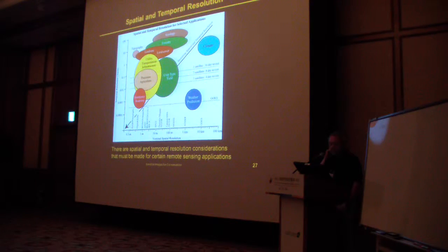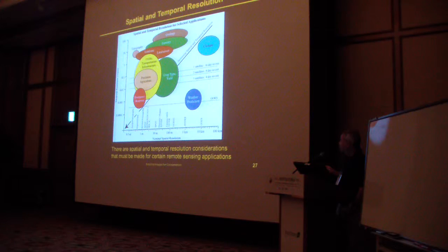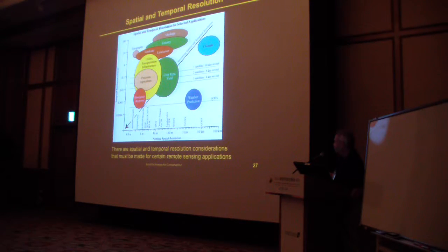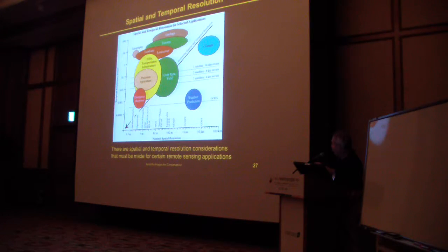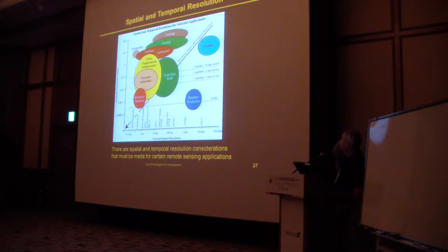Something to think about when dealing with remote sensing data is the trade-off between spatial resolution and temporal resolution — the frequency at which data are required. This scale goes from about 10 centimeters up to 100 kilometers for spatial resolution, and frequency from 100 years down to seven hours. When you look at the combination of spatial resolution and frequency, that's where the different instruments plot.